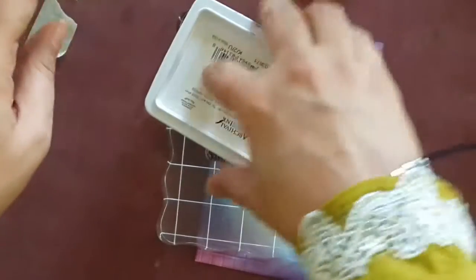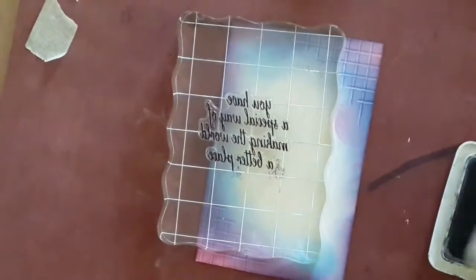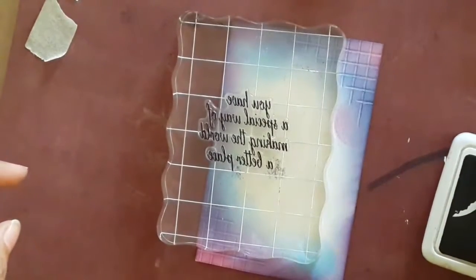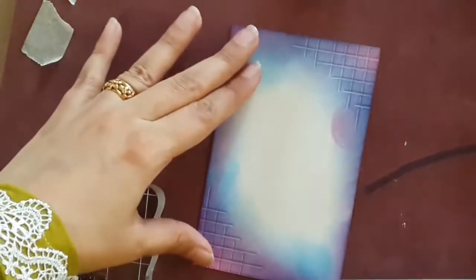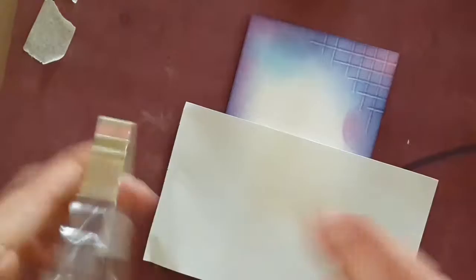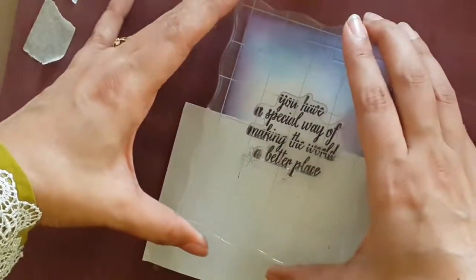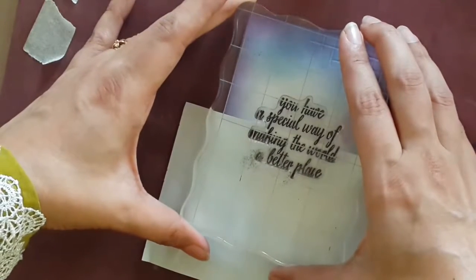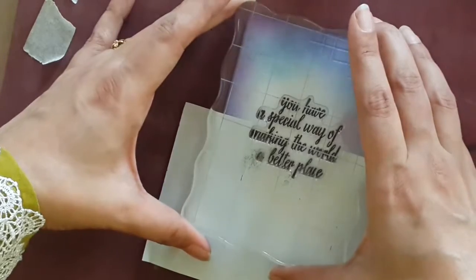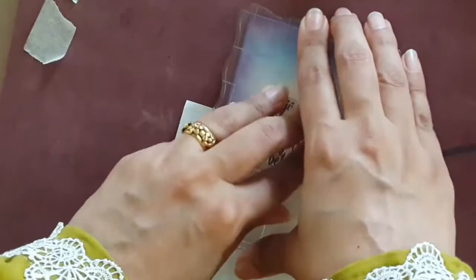I just ink up the whole thing actually. Now I'm going to just plan where I want the sentiment to be, and I am going to hide half of it by using an extra sheet of paper. Stamp that and press down.